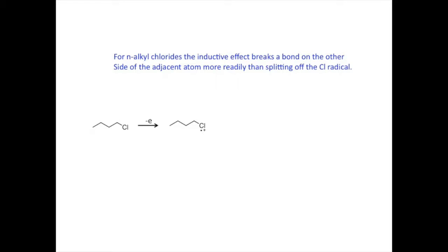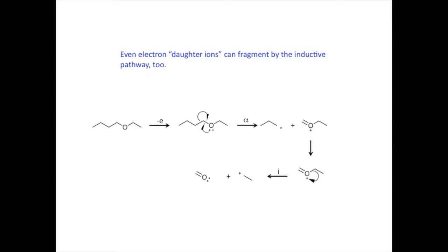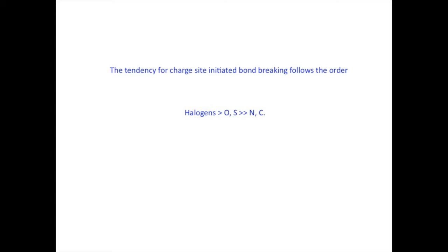Sometimes the inductive effect breaks a bond beta to the charge site. When we ionize a normal alkyl chloride, a pair of electrons is removed not from the adjacent bond, but from a bond on the far side of the attached carbon atom. The inductive pathway also works with even electron ions or daughter ions produced in a prior step. For example, an ether molecule might first participate in alpha cleavage. The charge site on the oxygen atom withdraws a pair of electrons from the bond it shares with the neighboring carbon, resulting in a loss of carbon monoxide and we observe an alkyl cation. Halogens are the most likely to cause inductive cleavage, followed by oxygen and sulfur containing charge sites, which in turn have much greater tendency than either nitrogen or carbon charge sites.